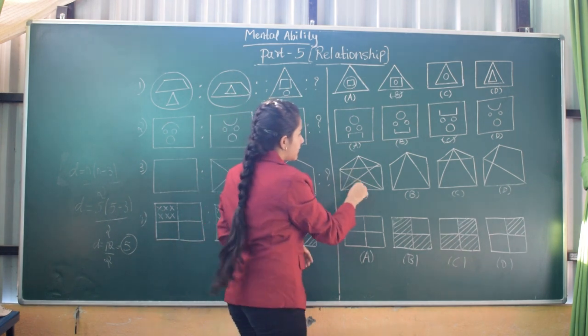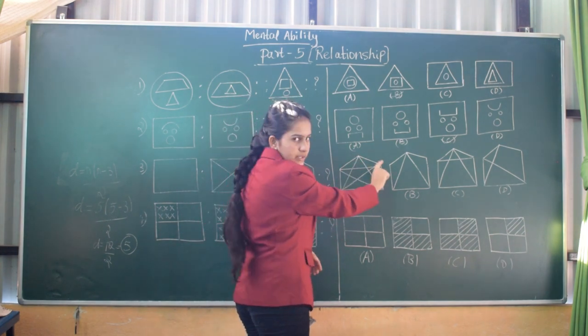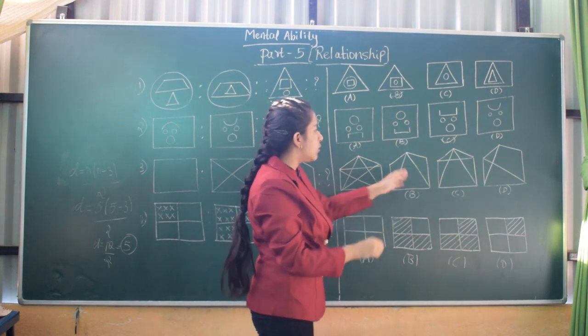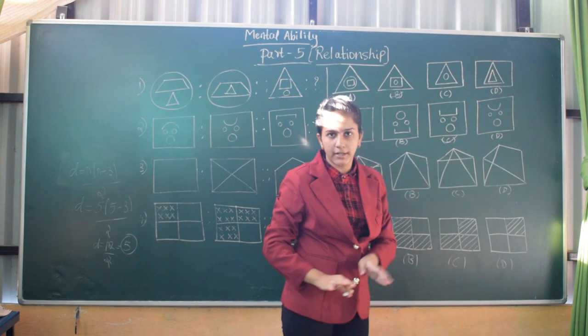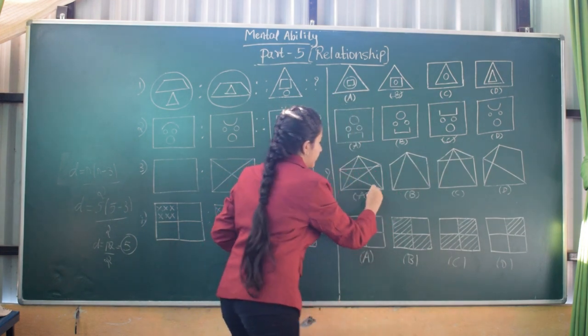In the first answer figure, counting the diagonals: 1, 2, 3, 4, 5 — there are 5 diagonals. In no other figure are there 5 diagonals. So obviously, the first figure is our answer.